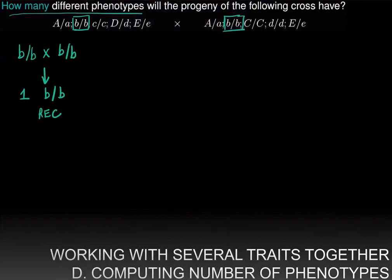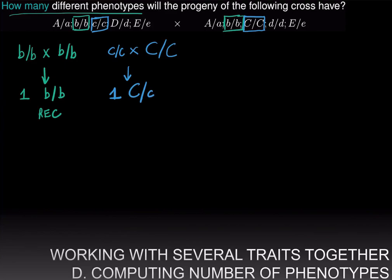The second trait is the cross between two homozygous individuals: little c over little c crossed to big C over big C. Since both parents are homozygous, all the progeny will be big C over little c — that is, they will all have the dominant phenotype.